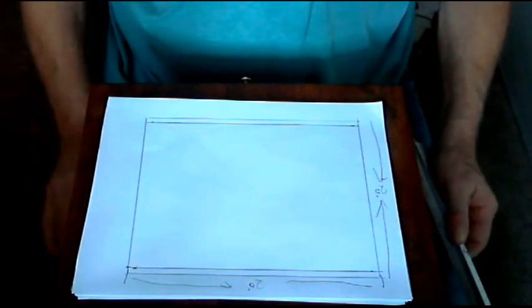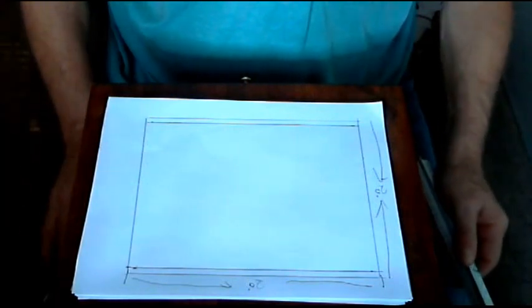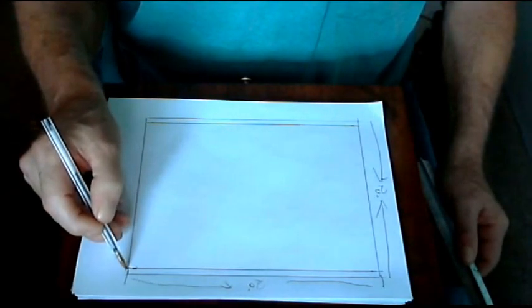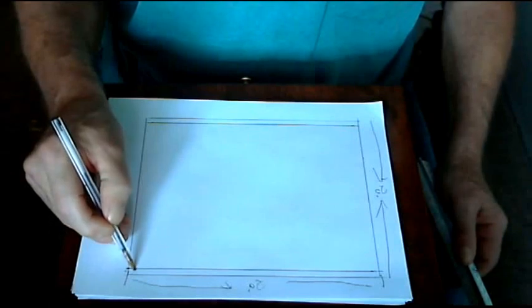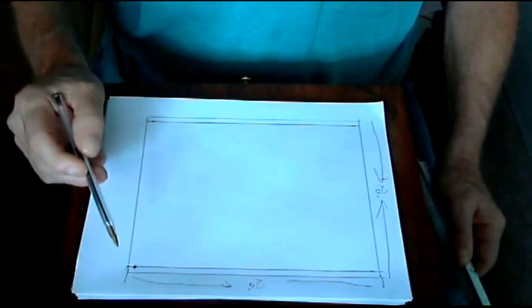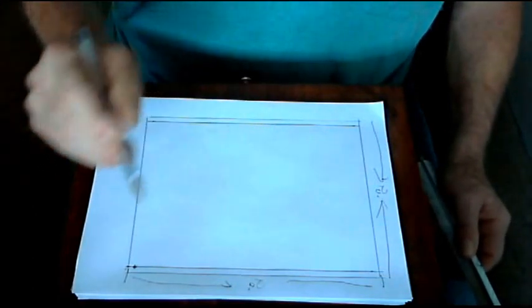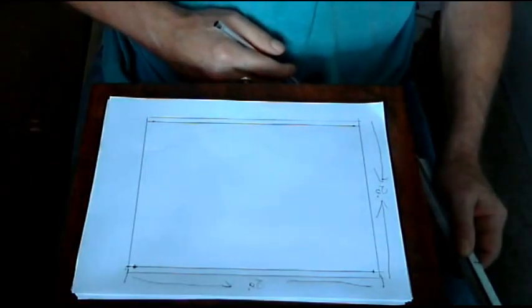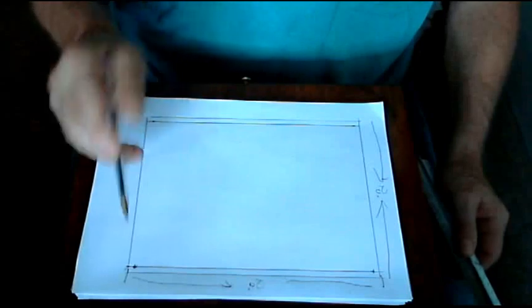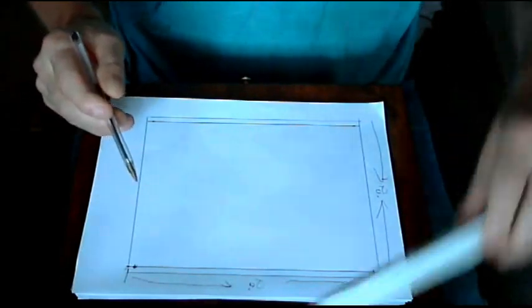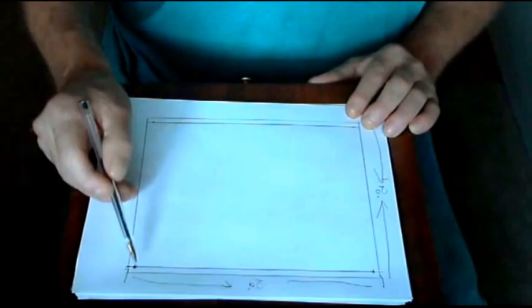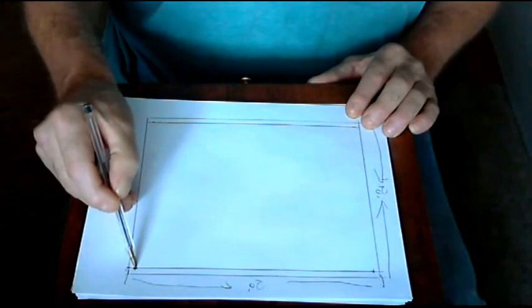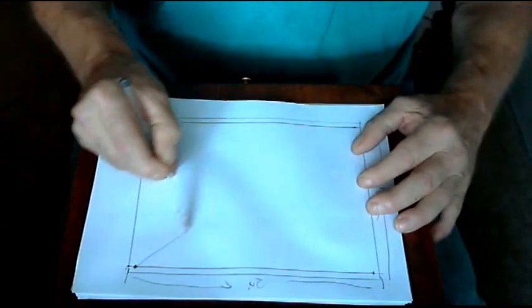Now we have established our 20 foot wide building with our two chalk lines and everything is correct there. Now measure in five and a half inches from the outside of the wall here. Hold the five and a half inch mark of your tape and pull across here 20 feet minus five and a half inches.